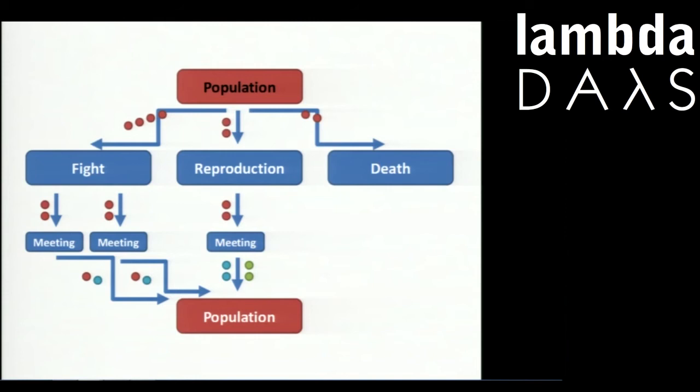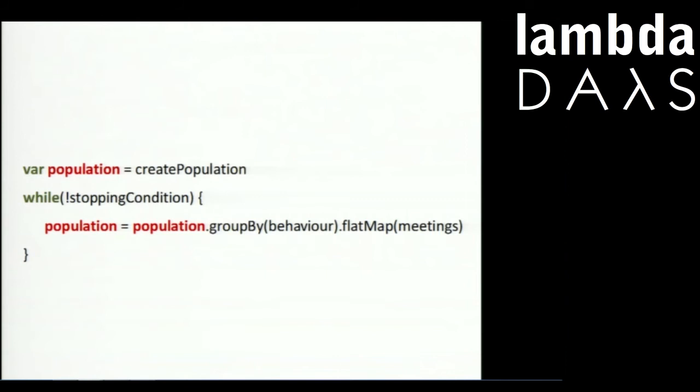You might say this model is still step-based — we still have an iteration and can end up with discrete generations. The fact is it does not have to be. This can be programmed both in a synchronous way and in an asynchronous way. The synchronous version is simple in Scala: we simply group agents by behavior and then flat-map each group with a meeting function. That's all — we have a new population and only have to iterate until some stopping condition is met.